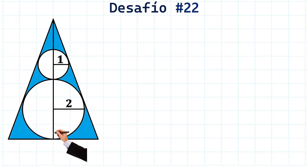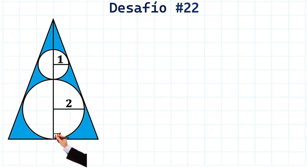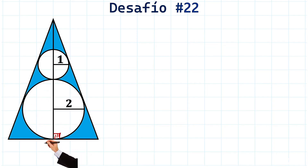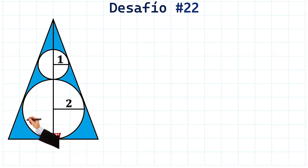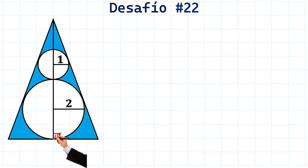Since it is the height, you will see a 90-degree angle here. Notice it reaches right at the tangential point between this circle and the base of the triangle. There is always a 90-degree angle between the radius and the tangent line to the perimeter of a circle.